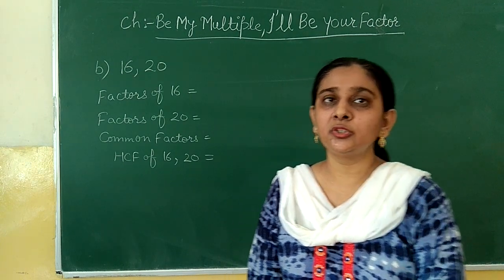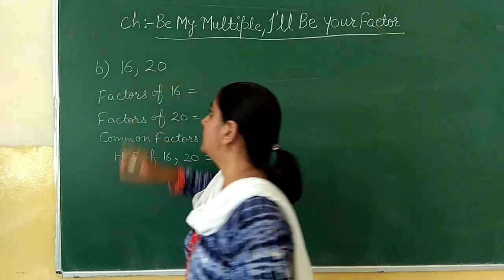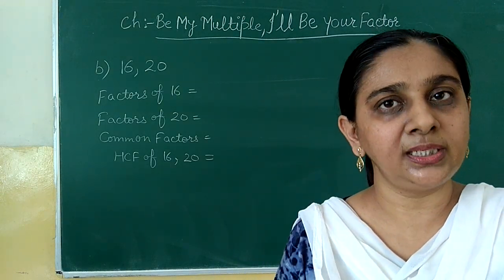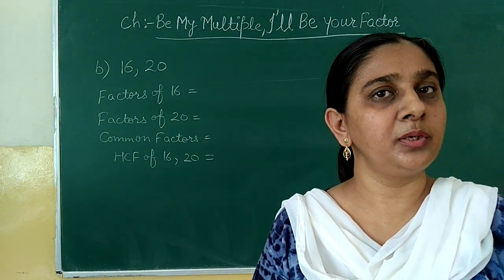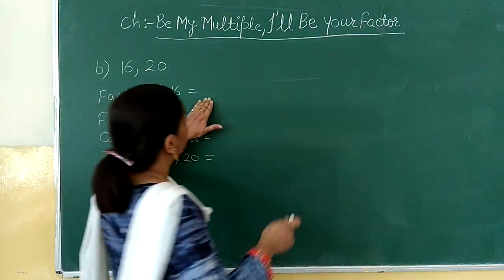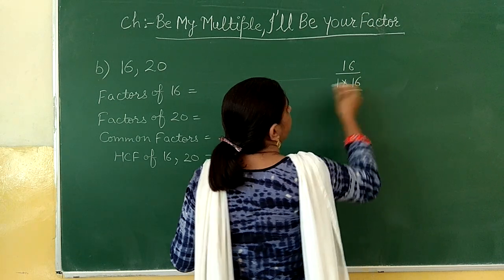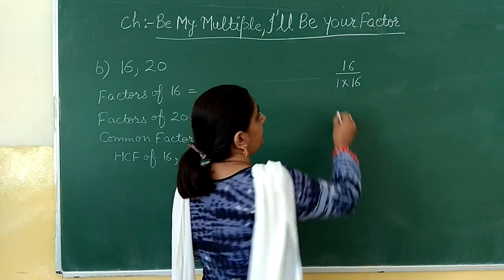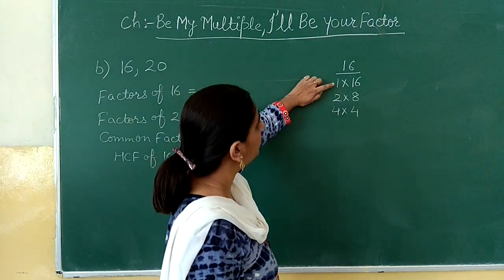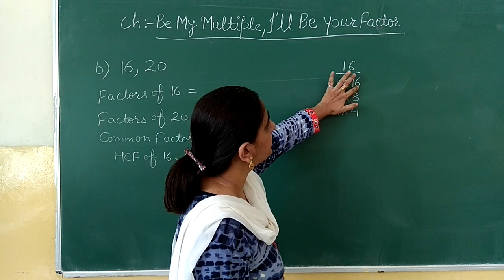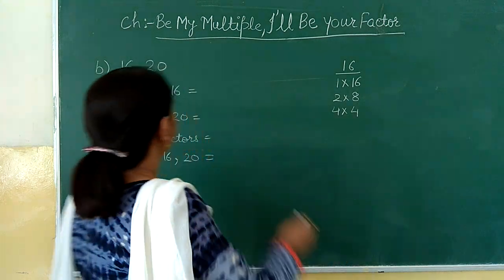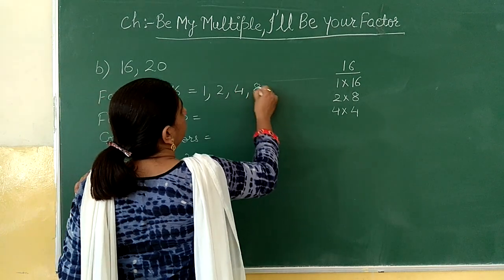Now in the next part we are going to find the HCF of two numbers: sixteen and twenty. First we will find the factors of sixteen, then the factors of twenty, then their common factors, and from the common factors we will find the HCF. Factors of sixteen: one times sixteen, two times eight, four times four — so the factors of sixteen are one, two, four, eight and sixteen. Note that four is repeating in the pairs, so we write it only one time.